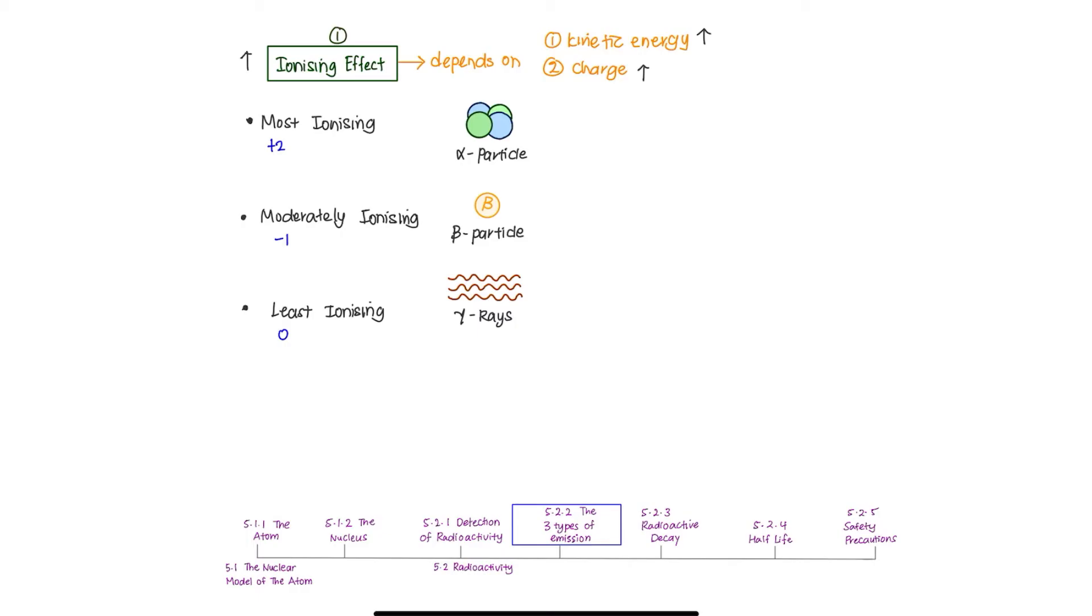Now, let's look into the second factor, which was the kinetic energy. Alpha particle has the greatest mass, therefore, it holds the highest kinetic energy, hence, the most ionizing. Beta particle is very light, and gamma radiation has no mass. Therefore, this concludes that alpha is the most ionizing, followed by beta particle, and gamma being the least ionizing.